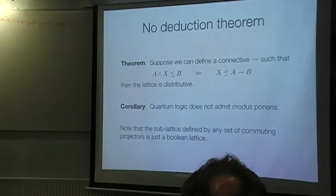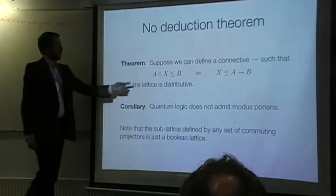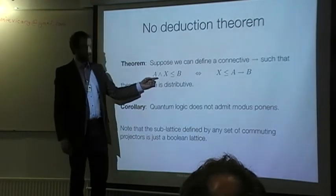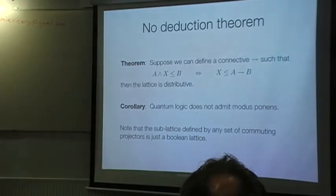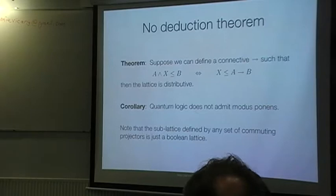And in consequence of that, you don't have a deduction theorem. So there's no adjoint to the conjunction here. And so you have no deduction theorem, you have no proof theory. And then you can't do anything like propositions as types with this kind of logic.